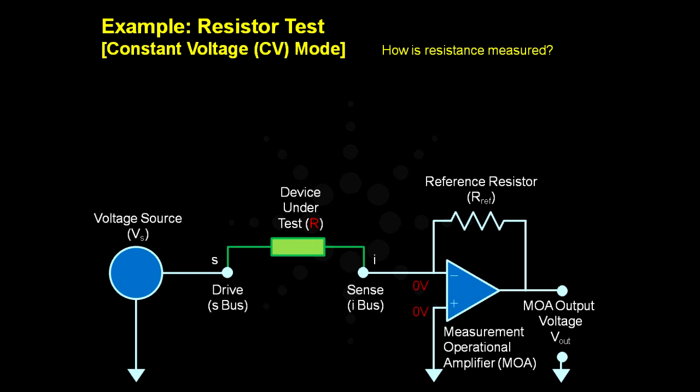In a perfect situation, 100% of the current flowing through the DUT will flow through the reference resistor RREF. Since IREF equals IDUT, if we measure VOUT, we can find that IDUT equals VOUT over RREF. Using Ohm's law, the resistance can be calculated by VS over IDUT.